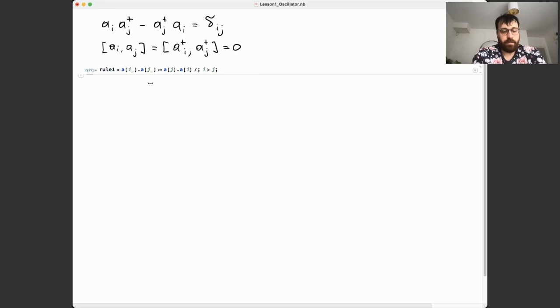Let me explain some details of the syntax. Underscore refers to patterns. This delayed rule means it will be implemented only when i and j are explicitly known to Mathematica. This allows us to add an extra condition using slash semicolon. We only apply this rule when i is bigger than j.